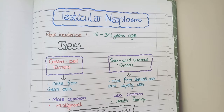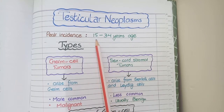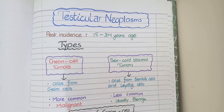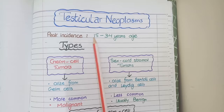The first point to understand is that testicular neoplasms predominantly occur in younger age populations. The peak incidence is at about 15 to 35 years of age, and even though there are some testicular tumors that occur at very young or very old age, most of the testicular tumors develop in the age group ranging from 15 to 35 years.